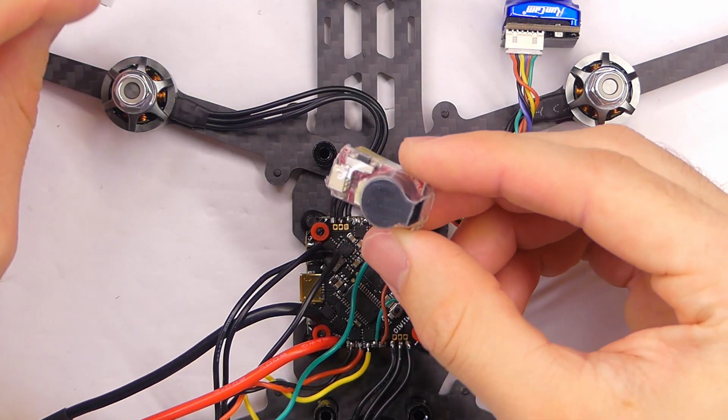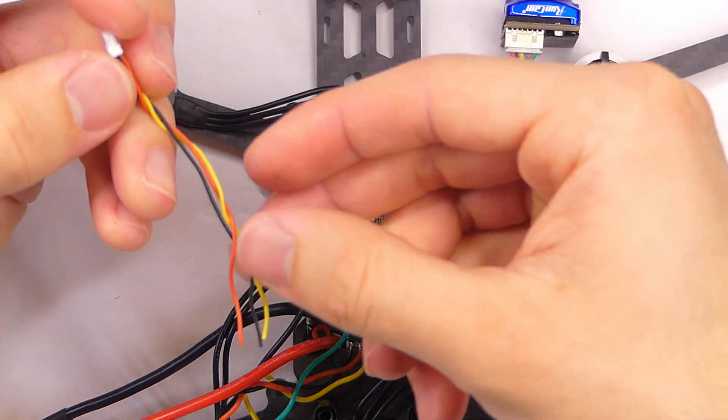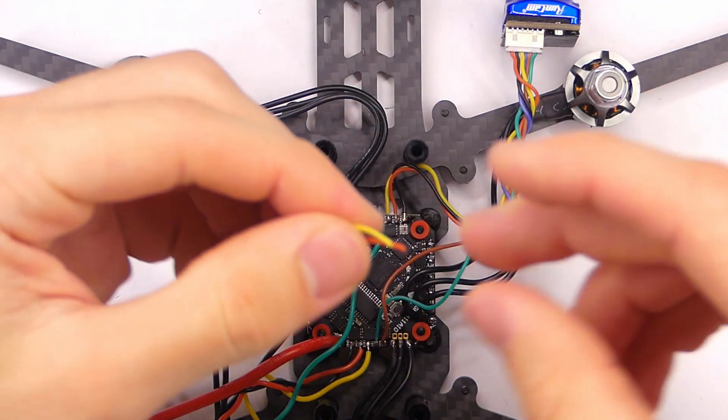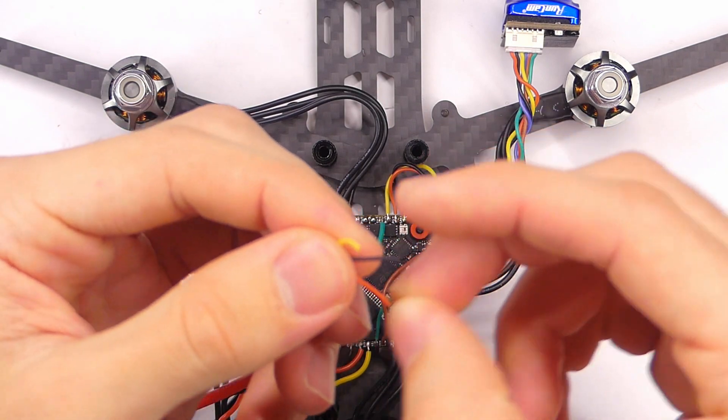Okay, now we are going to solder in our beeper wire right here, or our buzzer. And that will be these last three. Actually, I need to trim these and tin them as well.